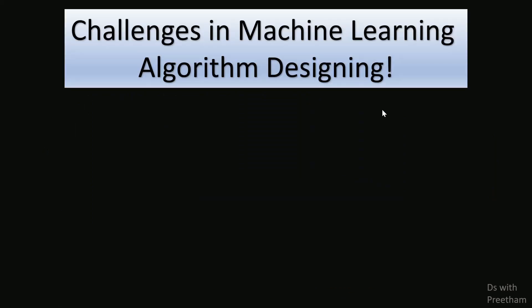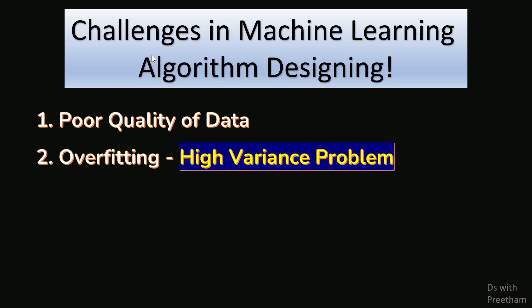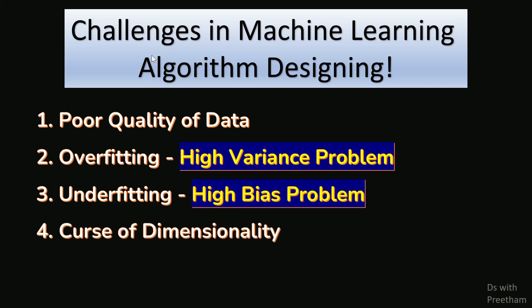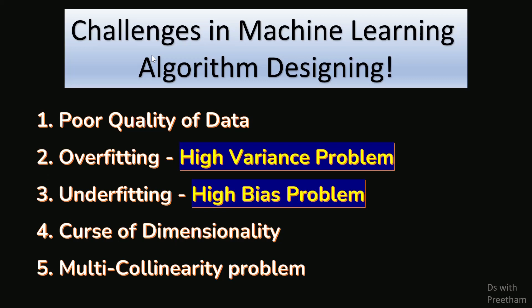There are some challenges in machine learning. These include algorithm reach issues and deep learning complexity. We are going for machine learning design, and we can see these five types of problems: first is poor quality of data, second is overfitting or high variance problem, third is underfitting or high bias problem, fourth is machine learning versus deep learning subset issues, and fifth is the curse of dimensionality.